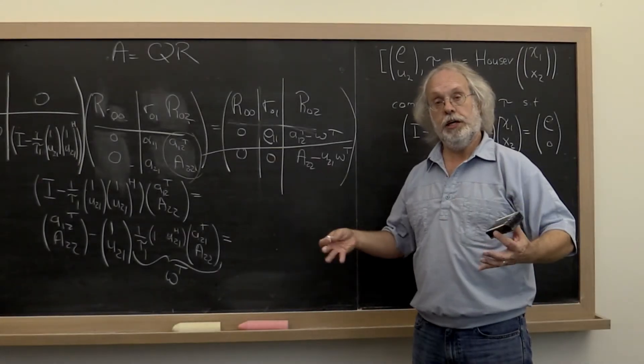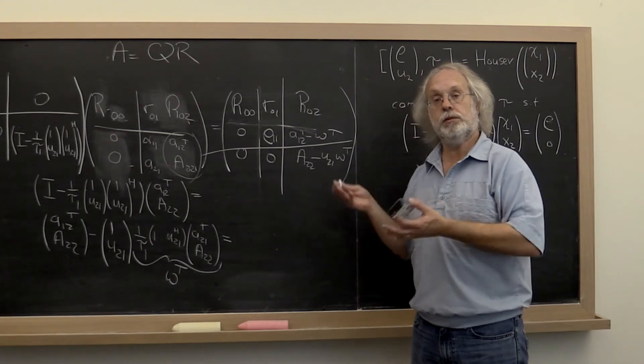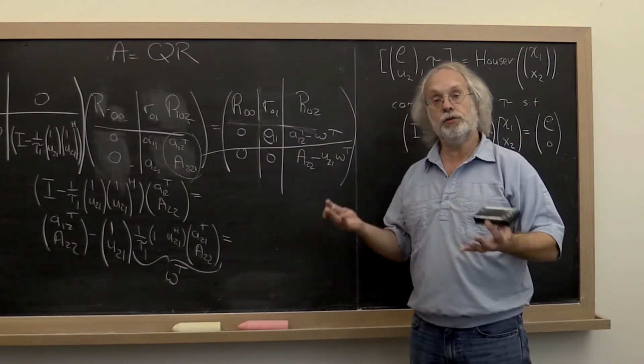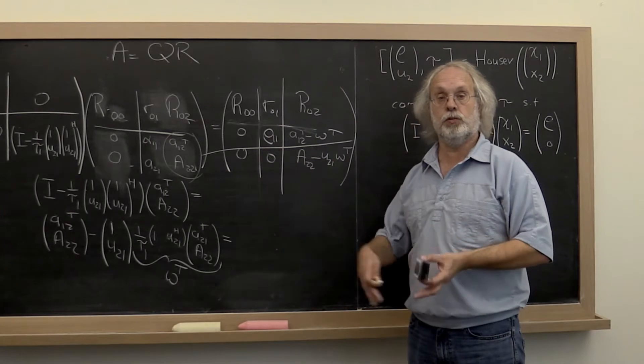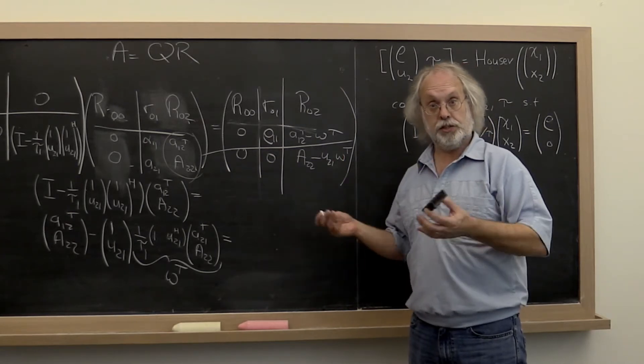So you just saw a quick video that shows how, in principle, you can apply the householder transformations in reverse in order to compute matrix Q.